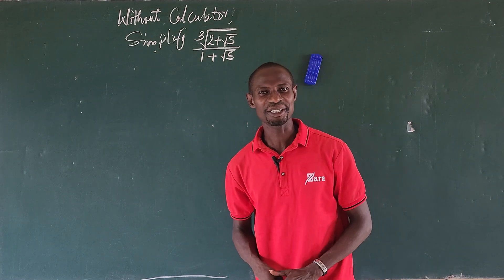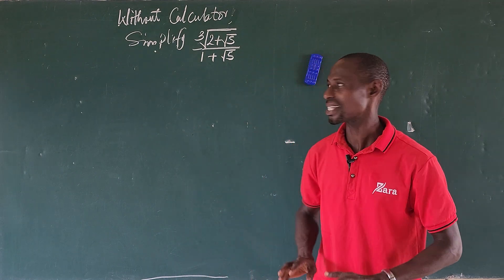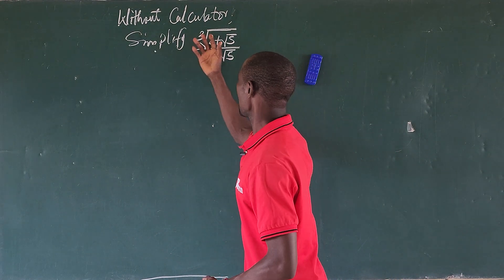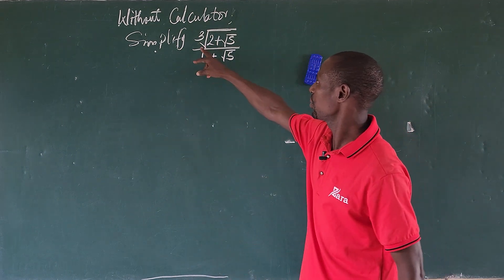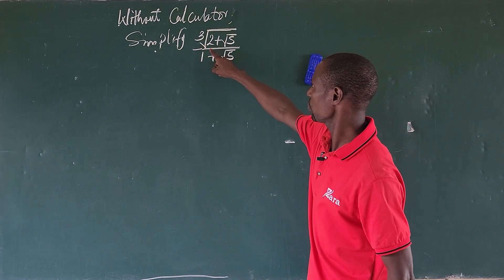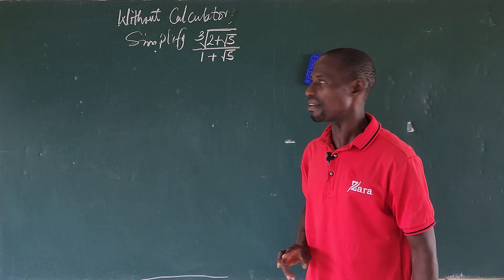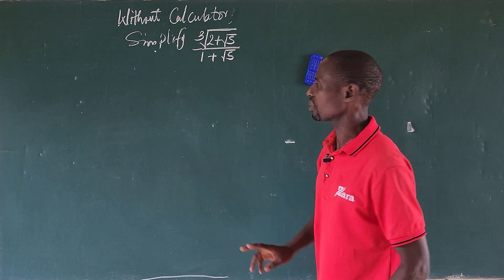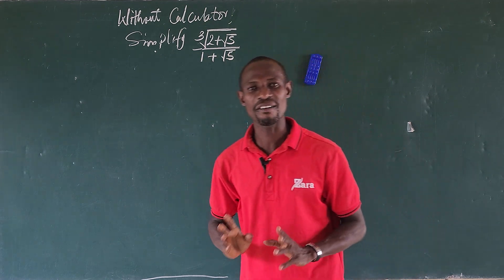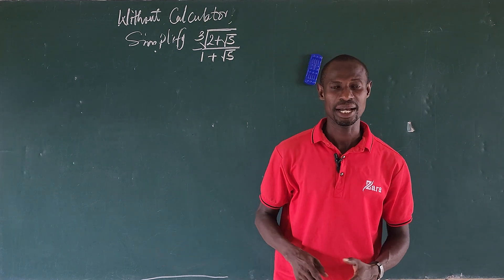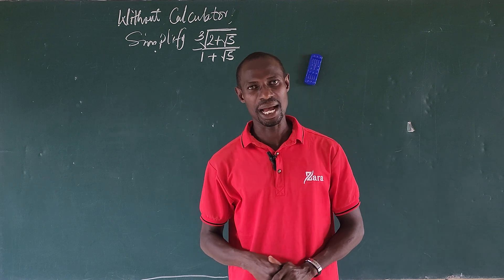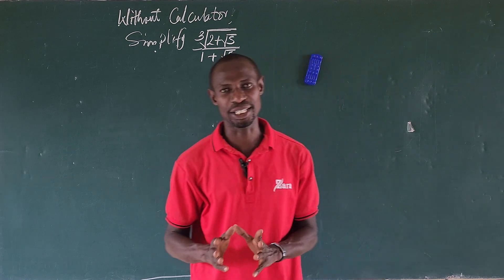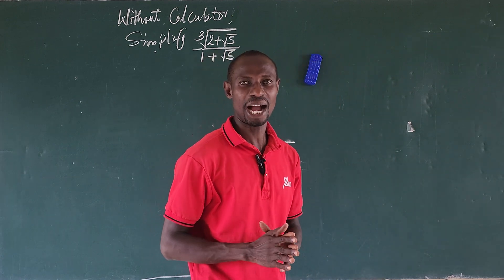Hello, great people, welcome to today's class. Look at the question before us: without a calculator, simplify the cube root of (2 + √5) all over (1 + √5). Here we have a mixture of two radicals — the cube root and the square root. So how do you simplify this without a calculator?